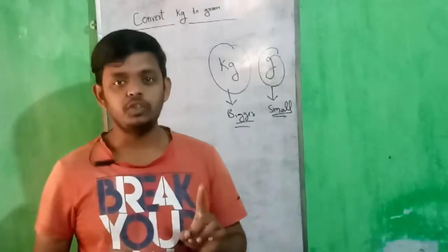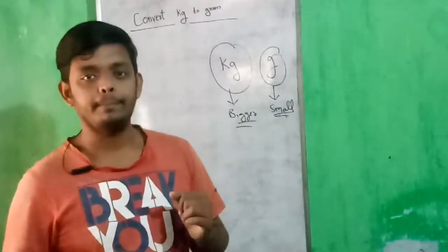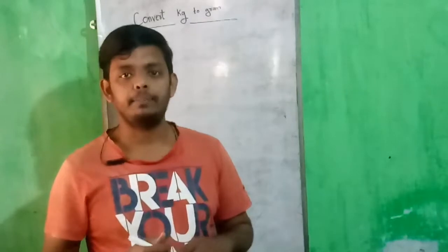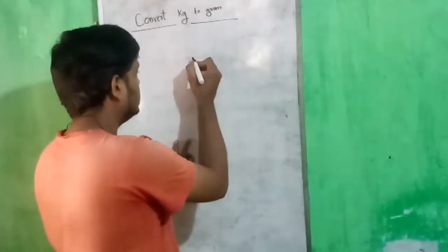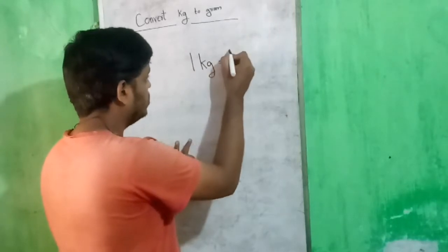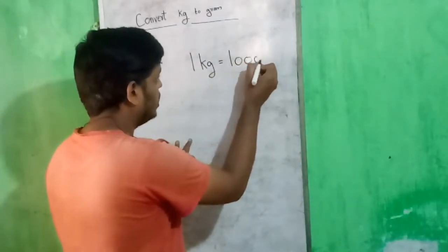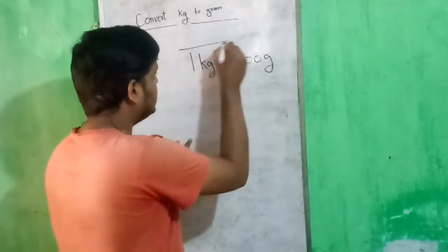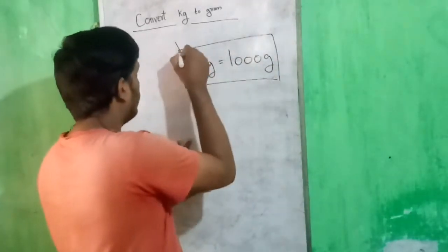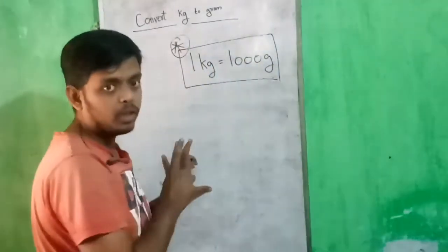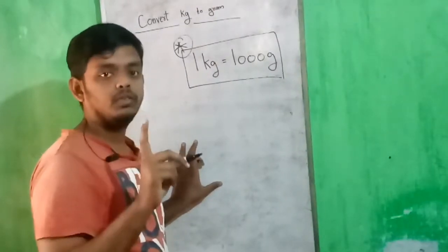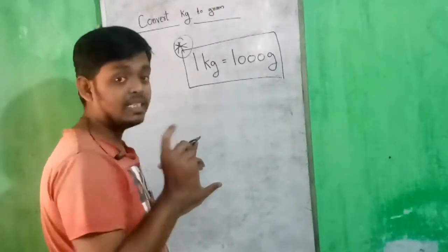Now let us derive the relation between kg and grams. We know 1 kg is equal to 1000 grams. You have to remember this — it's very important. 1 kg equal to 1000 grams.